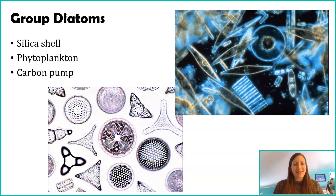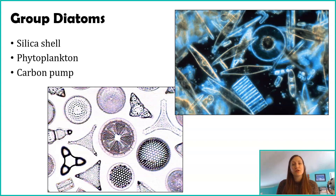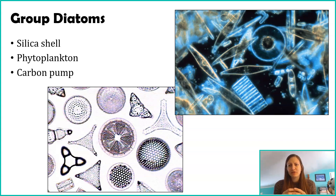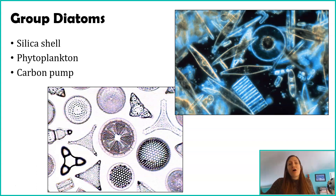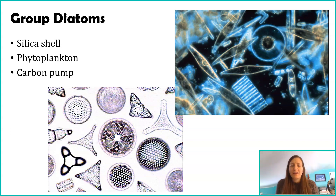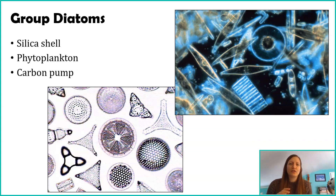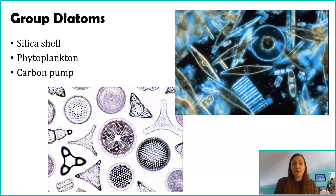Not only are diatoms phytoplankton, they are the most common phytoplankton in the world. Despite being unicellular, they serve as a carbon pump for us as humans. They have a silica shell — mostly silica with some other molecules — and inside is the organism. Like all other organisms on Earth, they are carbon-based. These diatoms do photosynthesis: they bring in carbon dioxide, take in sunlight and water, and that solar energy recombines the carbon dioxide and water to create organic carbon molecules like glucose and other molecules.